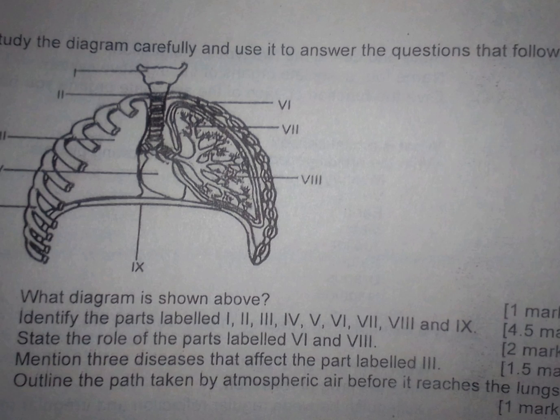Now we have to state the function for the parts VI and VIII. VI causes movement of the rib and then VIII allows gaseous exchange in the lungs.